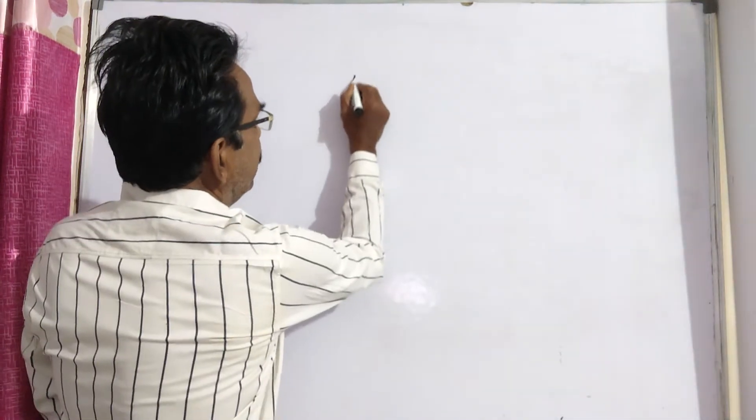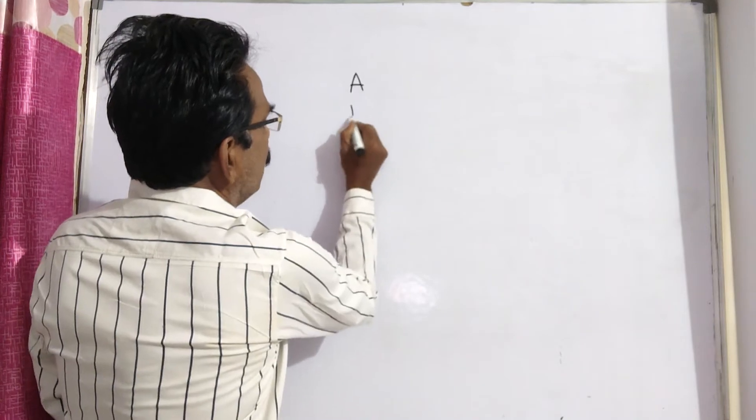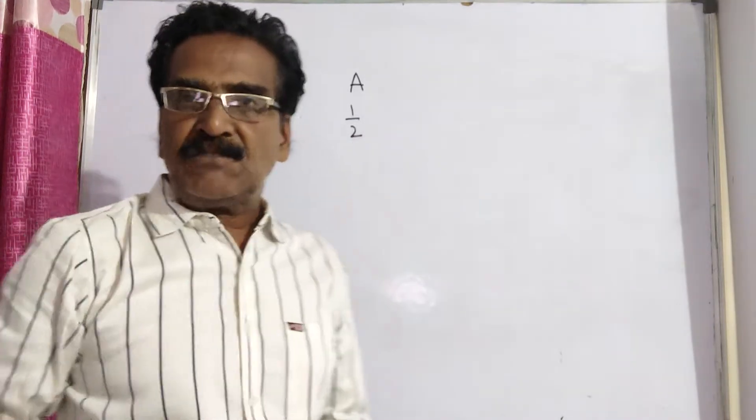See friends, the problem is given in the description box. A does half as much work as B in three-fourths of the time.